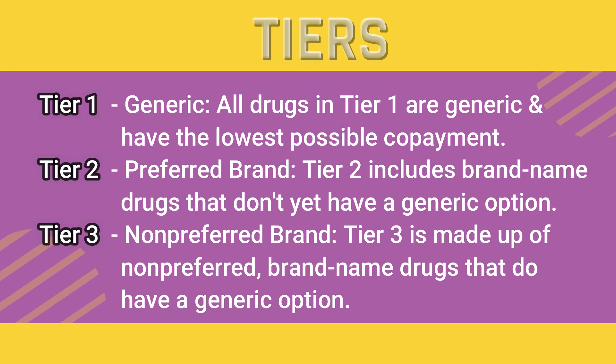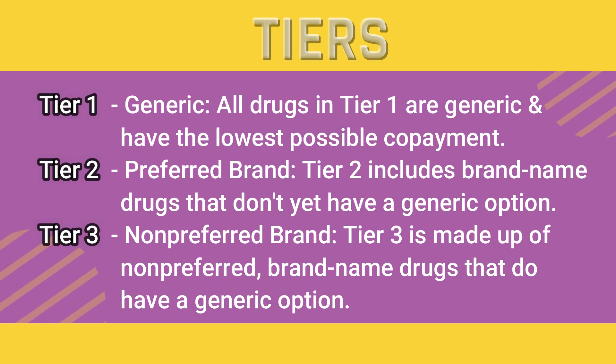Tier 1 medications are basic, generic, and very cost-effective — pretty much all insurances will pay for them. Tier 3 drugs, by comparison, are very expensive, commonly brand names with high dollar amounts, so insurance will sometimes not pay for them, or if they do, they require prior authorization. Prior authorization means submitting additional medical justification to the insurance for why a certain high-dollar or brand medication is needed, and the insurance will then review it and consider paying.